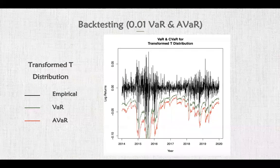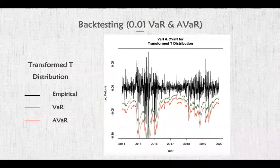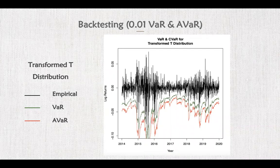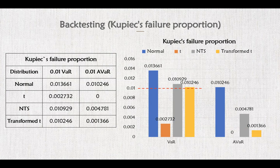These two are NTS distribution and transform T distribution. VaR and CVaR from transform T distribution are lower, but that does not mean one is necessarily better than the other. When we come to the failure proportion, in terms of VaR, whose proportion is closer to 1% has better performance. Normal distribution is not too bad. Student T distribution is the worst, far away from 1%. NTS is good, and transform T distribution is slightly better than NTS.